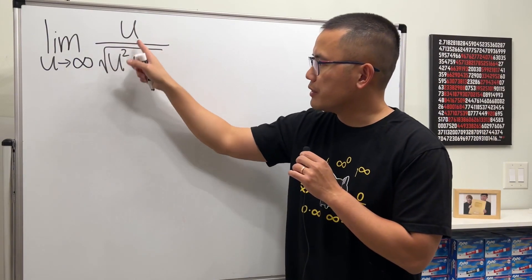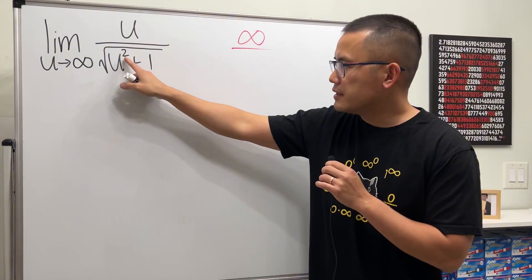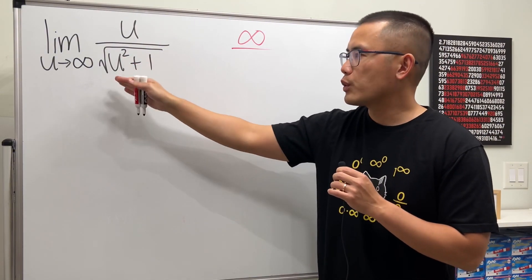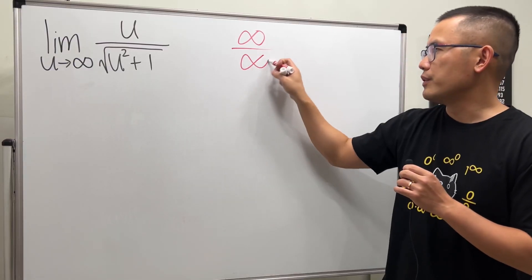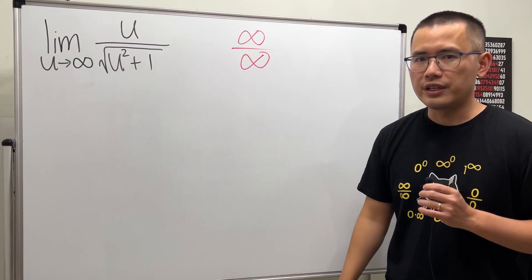If we put infinity to here and here, we will get infinity over infinity squared is infinity, plus 1 is still infinity, square root of infinity will give you infinity. And this is an indeterminate form. We cannot draw any conclusion yet.